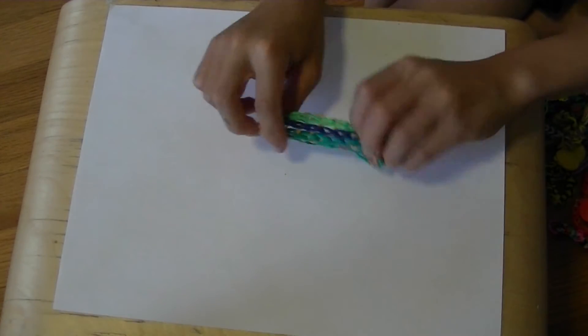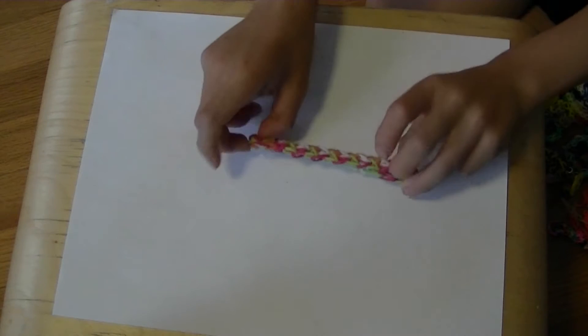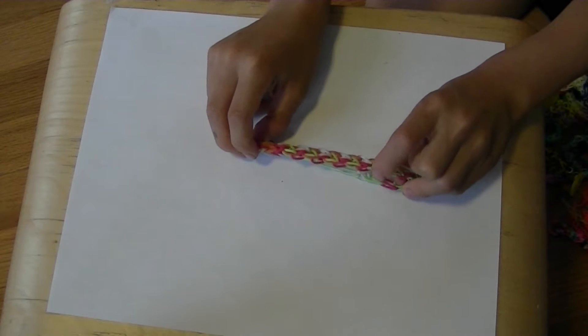This is my invention also, the noodle bracelet because it looks like noodles. This is a triple single bracelet. It was also one of my first designs but if you're curious here is my very very first design that I kept with me. The diamond pattern.